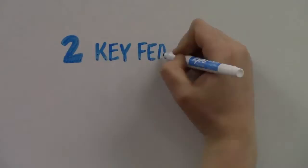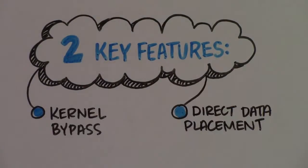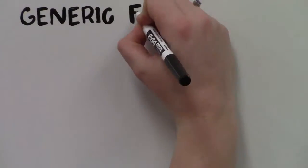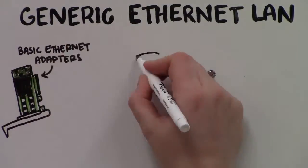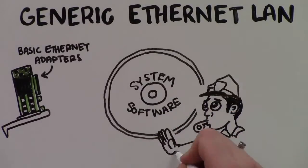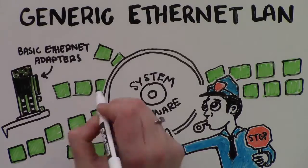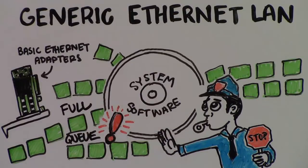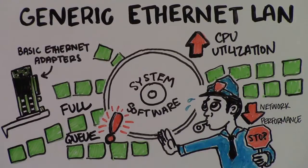Two key features of iWARP RDMA that make it so efficient are kernel bypass and direct data placement. Let's talk about kernel bypass first. With generic Ethernet LAN traffic, the processor busily aligns incoming packets into queues and assembles them for transmission. The processor gets interrupted when a queue is full and has to stop to service the interrupt. All this traffic management drives up CPU utilization and slows down network performance.